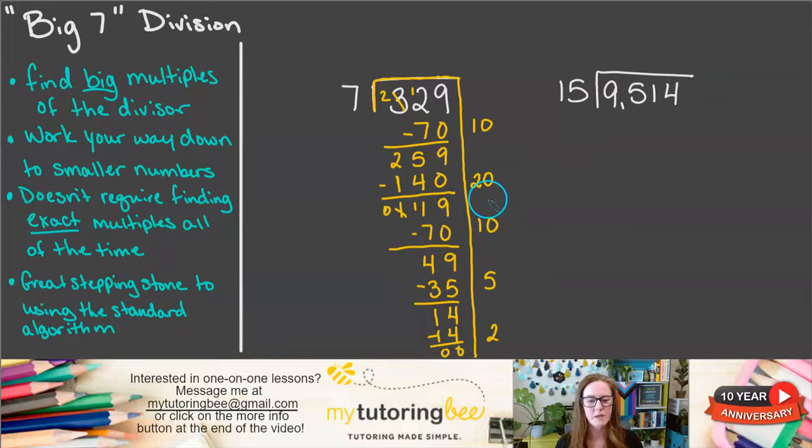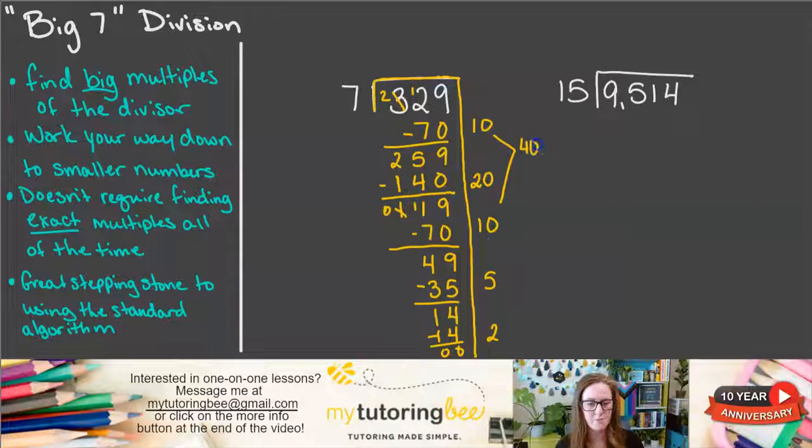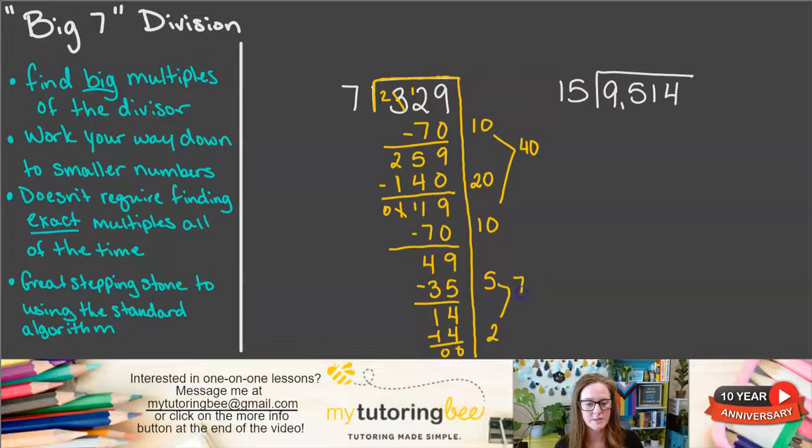Now, how many groups of 7 did we subtract away? Well, let's add them all up. I'm going to add up all of my 10s. 10 plus 20 plus 10 gives us 40. And then 5 plus 2 gets us 7. So we took out 47 groups of 7.